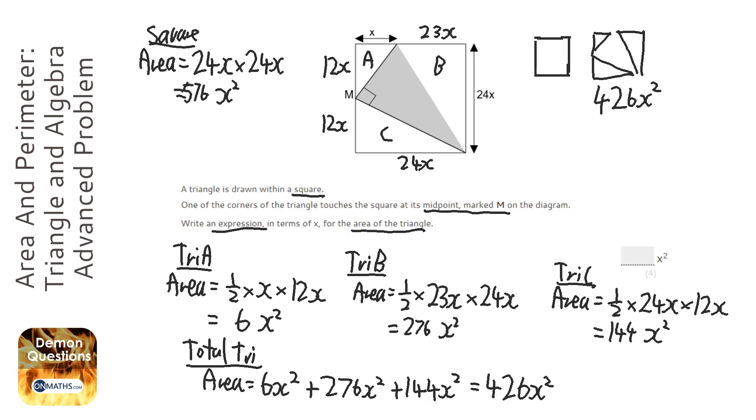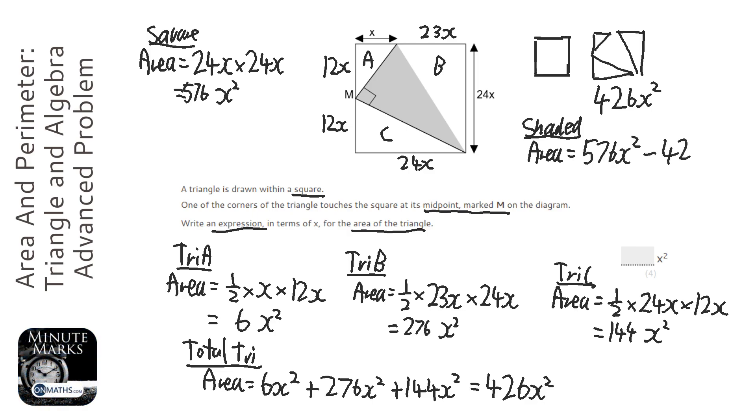So the shaded area is going to be the total square area, which is 576x squared, take away the bits we don't want, which is 426x squared. So 576 take away 426, which is 150x squared. So my answer is 150x squared.